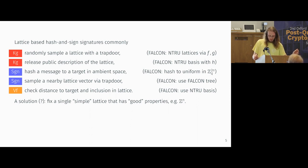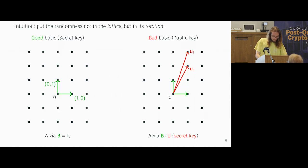But we really want to do this. And so to do this, we need a new perspective. And that new perspective is exactly this lattice isomorphism framework. The intuition of this framework is put the randomness not in the lattice, but instead in a rotation of the lattice.